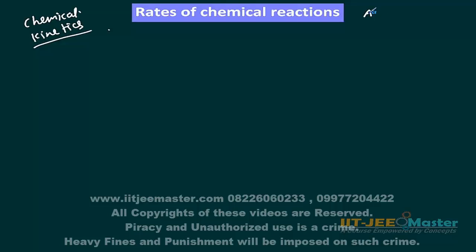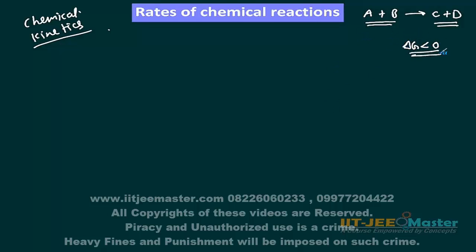If you are a chemist you must come across many chemical reactions — there will be reactants, there will be products. So whether a reaction will take place or it will not take place — this is a question we know about delta G. If delta G is less than zero, then the reaction will proceed in forward direction. One more important thing is the speed of reaction. Because if a reaction takes place very slowly then it has no meaning. So speed of reaction is more important, and how long the reaction will take place — the extent of the reaction is also important.